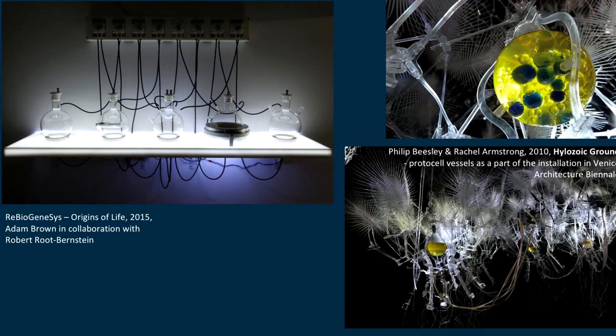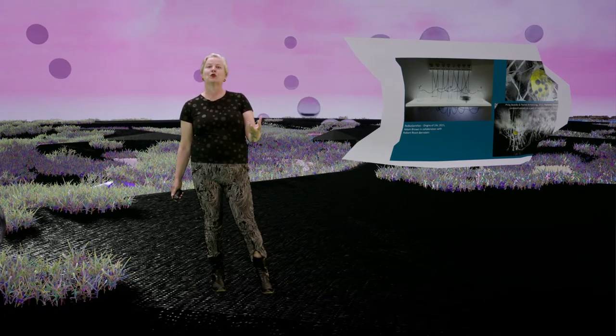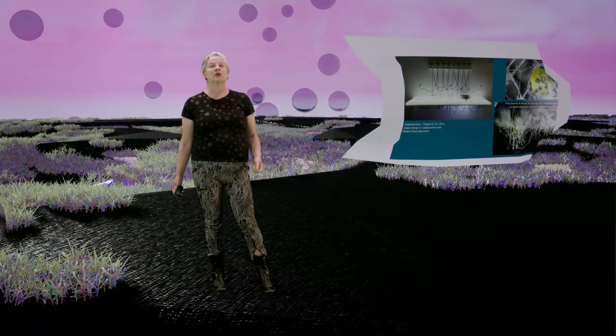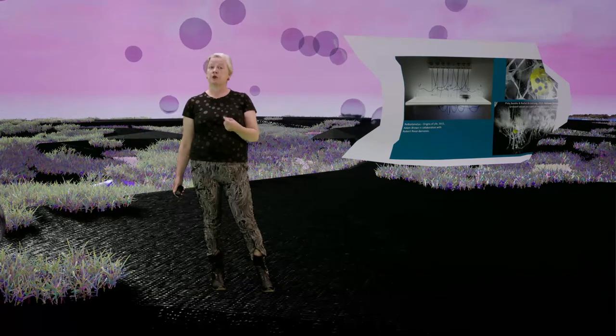Here I show two artworks that have dealt with this. Adam Brown and Robert Rubinstein made an Origins of Life free biogene system, where several vessels each contain, from history, a set of chemistry which could potentially create protocells or semi-living systems. On the other side, Rachel Armstrong and Philip Beesley's system used incubators for protocells connected to the Venice Lagoon. The idea was that, since Venice is sinking, could protocell systems potentially help save it, like a kind of robot bringing in certain ingredients?